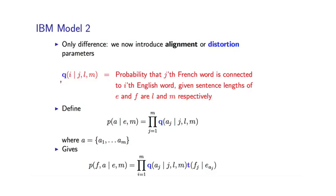I'm going to use Q for these parameters, and it's going to have a few different indices. M, as before, is the length of the French sentence, and L is the length of the English sentence.